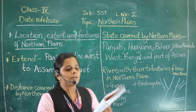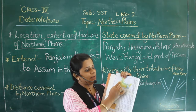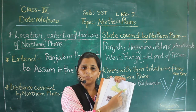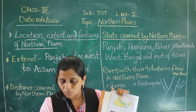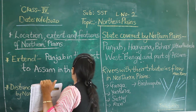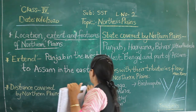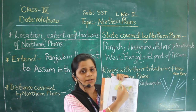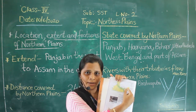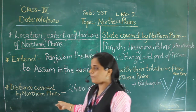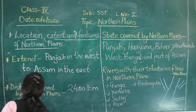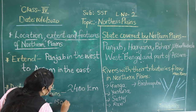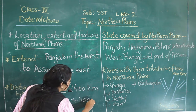Now if you look at the map, the northern plains are broad in some places and narrow in others. If we talk about the length, it covers a distance of 2400 km. If we talk about the width, somewhere it is broad and somewhere it is narrow. The width of the northern plains is 150 km to 300 km.